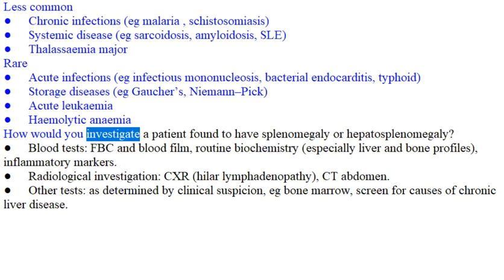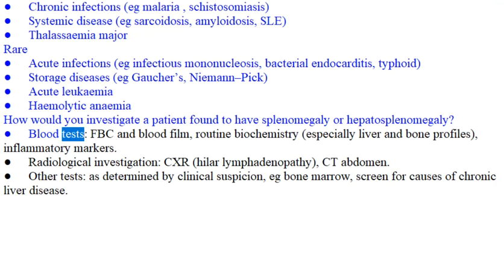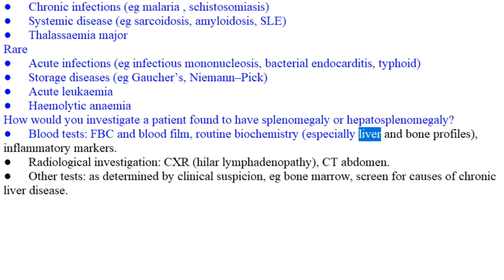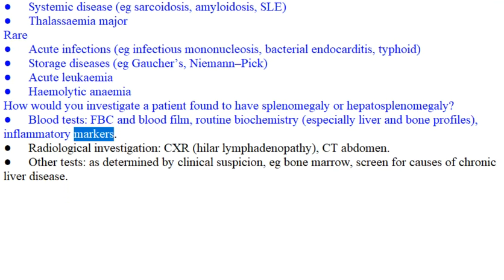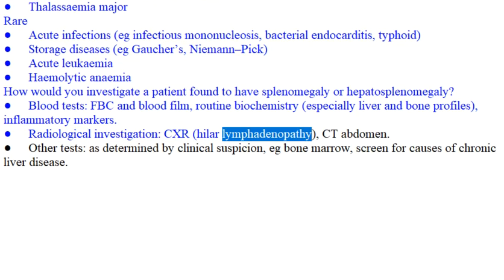How would you investigate a patient found to have splenomegaly or hepatosplenomegaly? Blood tests include FBC and blood film, routine biochemistry especially liver and bone profiles, and inflammatory markers. Radiological investigations include CXR for hilar lymphadenopathy and CT abdomen.